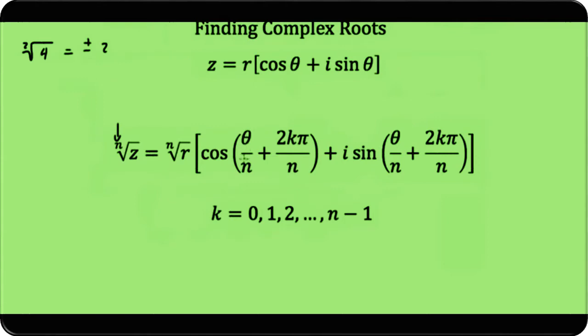But then to get the other solutions, we add 2kπ/n, where k is an integer. For our first solution, k equals 0. For the second solution, k equals 1. For the third solution, k equals 2,